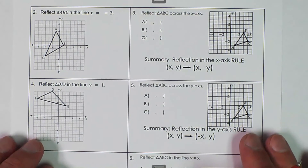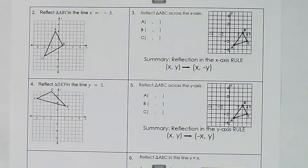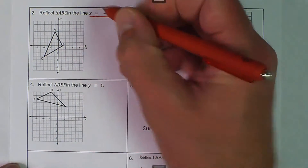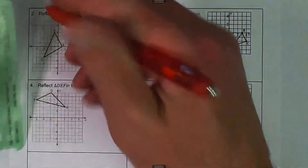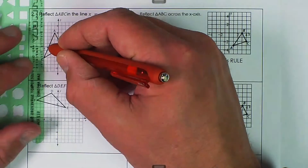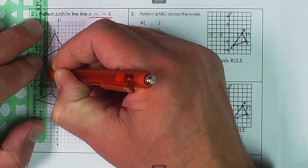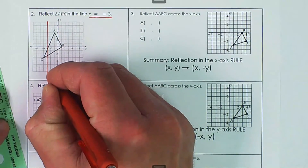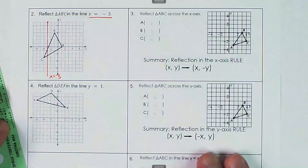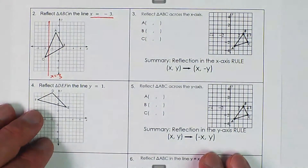Here we have a reflection of triangle ABC in the line x equals negative 3. All we have to do is draw the line x equals negative 3 — there's going to be a vertical line at negative 3, which is right here. This is the line x equals negative 3, and all we have to do is count again.